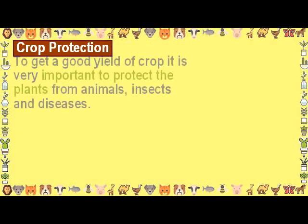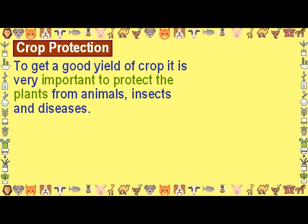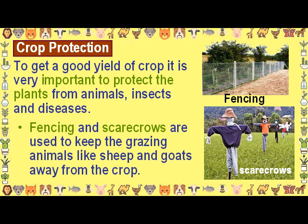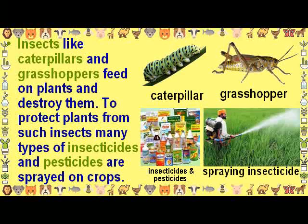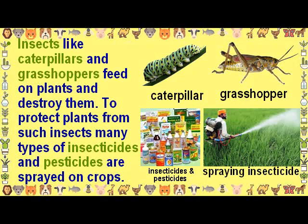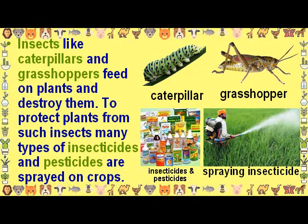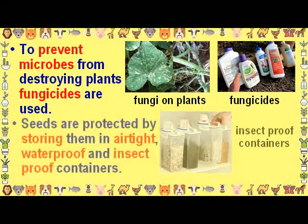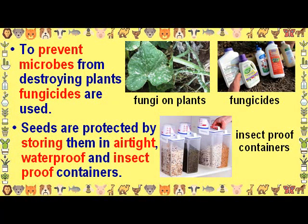Crop Protection. To get a good yield of crop, it is very important to protect plants from animals, insects and diseases. Fencing and scarecrows are used to keep grazing animals like sheep and goats away from the crop. Insects like caterpillars and grasshoppers feed on and destroy plants. To protect plants from such insects, many types of insecticides and pesticides are sprayed on crops. To prevent microbes from destroying plants, fungicides are used. Seeds are protected by storing them in airtight, waterproof and insect-proof containers.